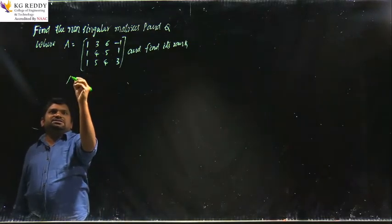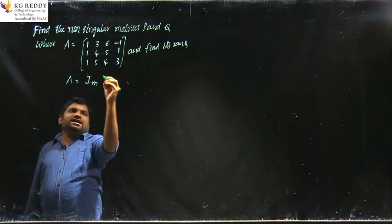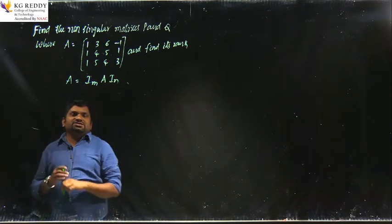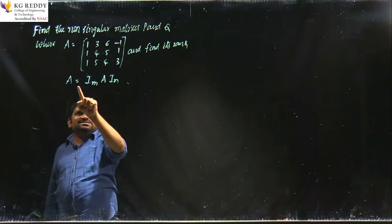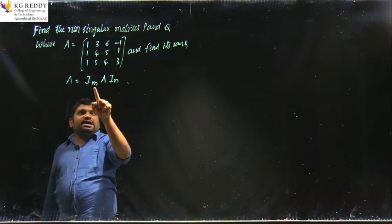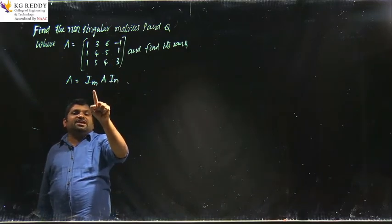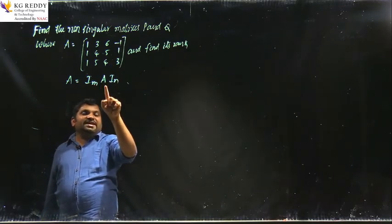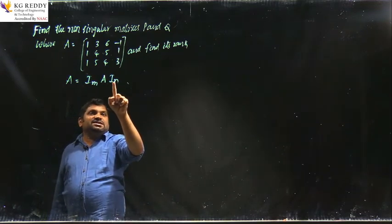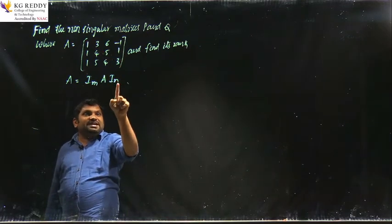Come to the solution process. A equals to — the formula is I_m into A into I_n. This means A equals to the given matrix only. This equals to identity matrix of m-th order rows. How many rows are given in the problem? Based on that we have to write here. A is as-is, and I_n identity matrix — how many columns are given in the matrix, based on that we have to write.